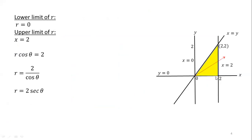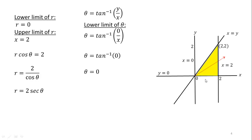Next, in order to calculate the limits of theta, you can see in this region our angle starts from 0 along the x-axis and our region ends at the line x equal to y. So the starting angle, or the lower limit of theta, is 0. We can also calculate the limits of theta using the formula theta equals tan inverse of y over x. Since the equation of the x-axis is y equal to 0, substituting gives theta equal to tan inverse of 0, which is 0. So the lower limit of theta is 0.